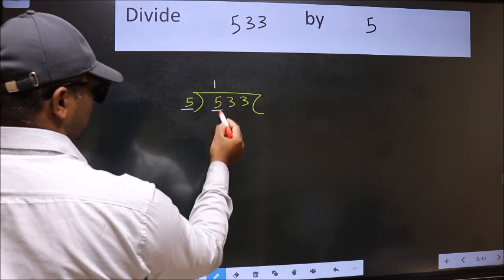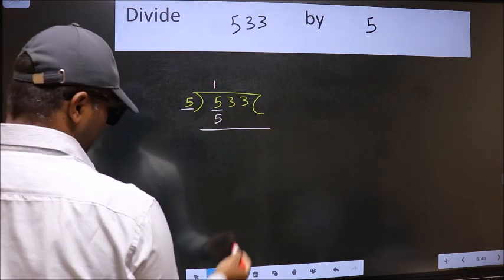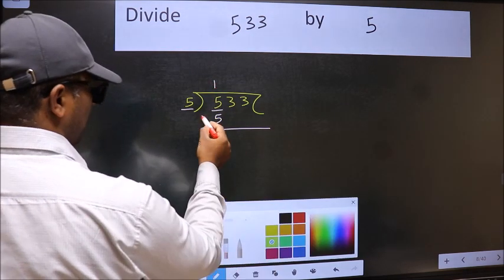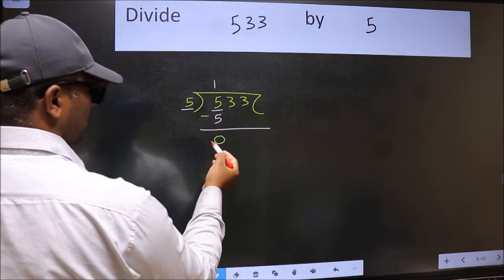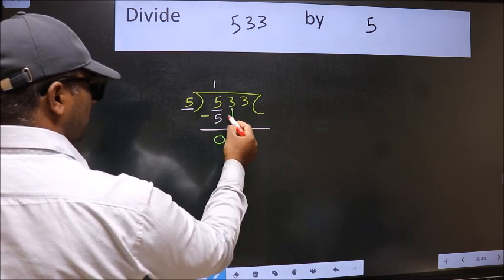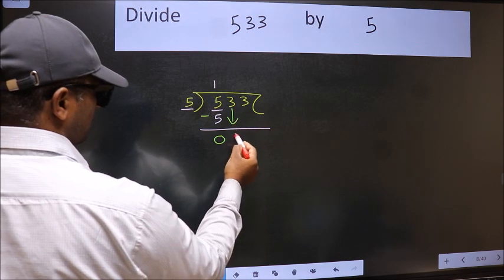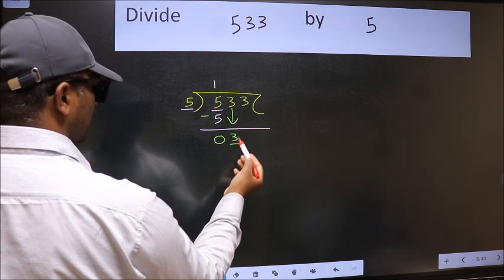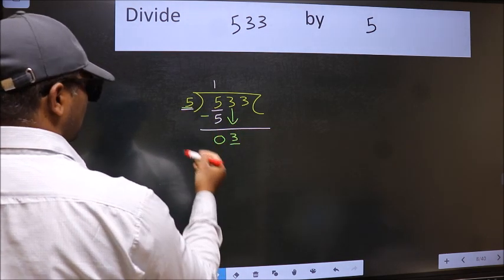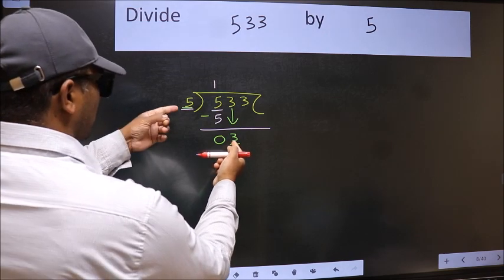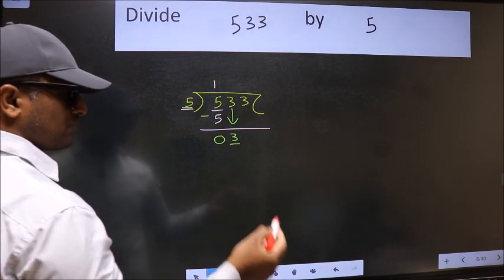Five ones five. Now we should subtract, we get zero. After this, bring down the beside number, so three down. Now here we have three and here five. Three is smaller than five, so we should bring down the second number.